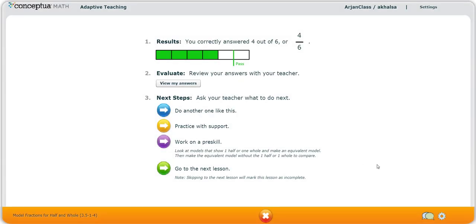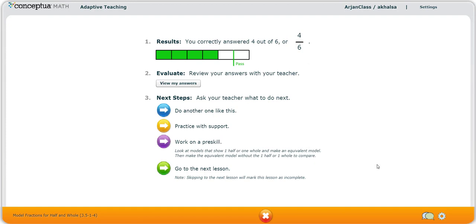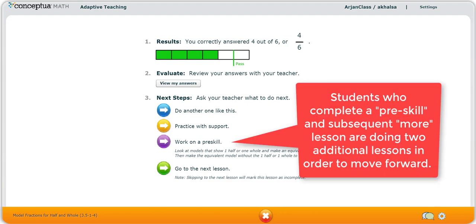If the student does either the More or the remedial lesson, they're doing one extra lesson compared to those who simply move on. If the student does the purple or pre-skill lesson, they'll be doing two. First the pre-skill, and if they pass that, then they'll move to the M More lesson, that blue one.